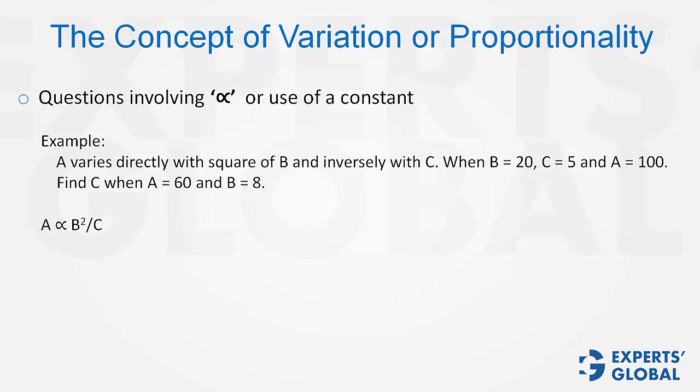To remove the sign of proportionality, we have to include a constant. Therefore, we say that A is equal to k times B² upon C, where k is a constant.